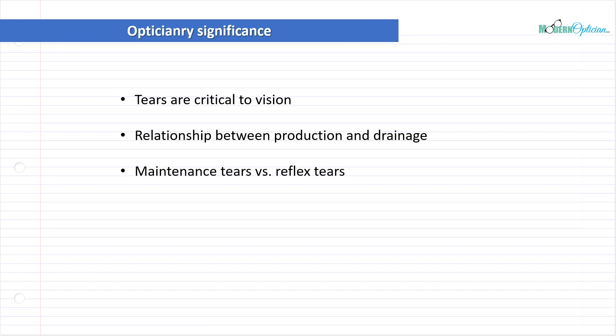Think about the difference between maintenance tears and reflex tears. Everything we've talked about today - the lacrimal gland producing the tears and flowing - I would consider that the maintenance tear cycle. This is happening all the time; our eyes are always hydrated and need to be for the reasons we've discussed. Therefore, the eye is always producing tears in a maintenance fashion.